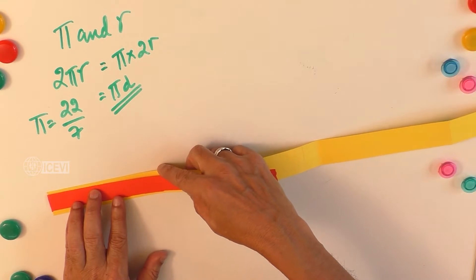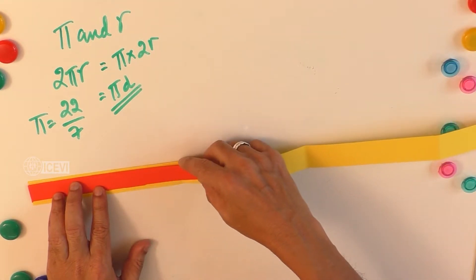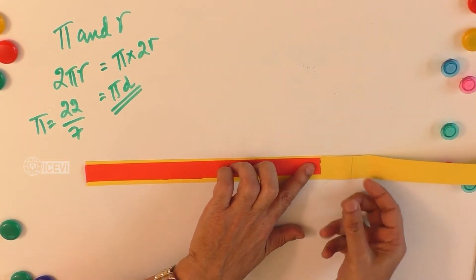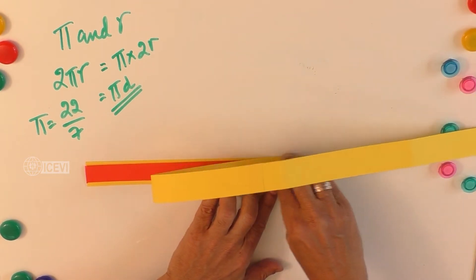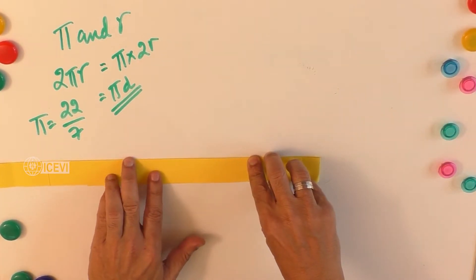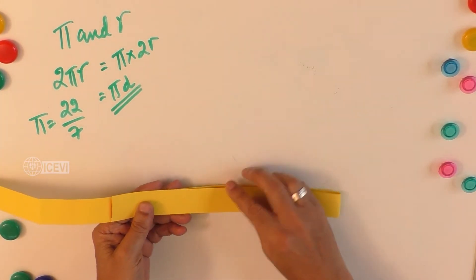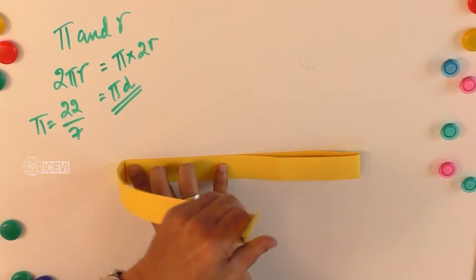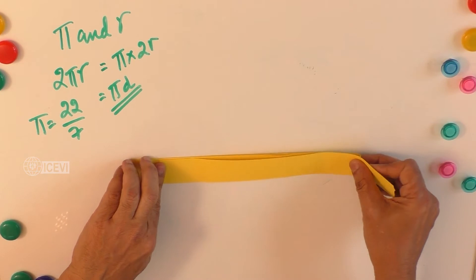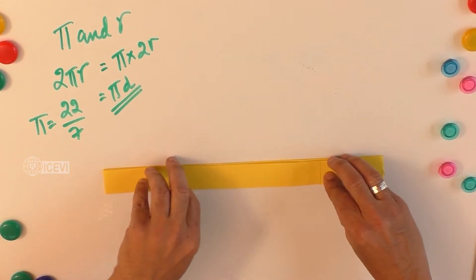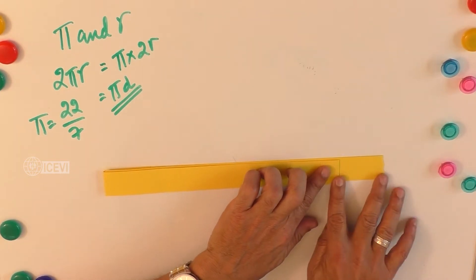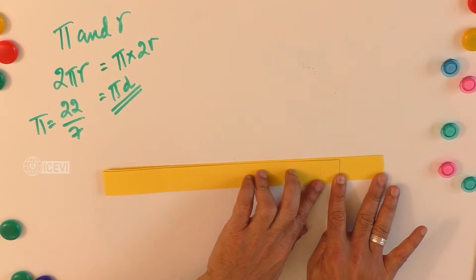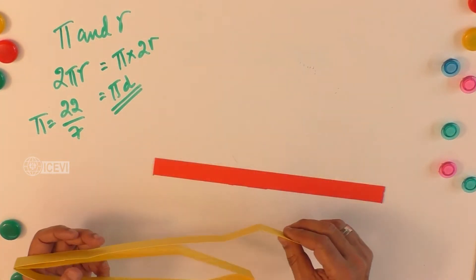Let us find out how many times the diameter fits into the circumference. This is one — you can fold the paper strip — and two. Then turn it and make one more: three. And then there is a portion left over.